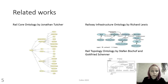Railway transport ontologies receive a lot of attention. For example, there are Rail Core Ontology and Rail Topology Ontology. Rail Core Ontology is based on the international UML standard and is used to integrate timetable data, maps, and GPS to locate faulty trains. Rail Topology Ontology enriches the international UML standard and is used to integrate railway infrastructure data.